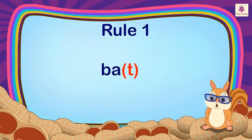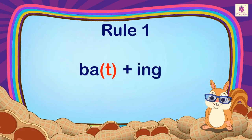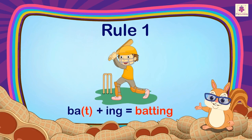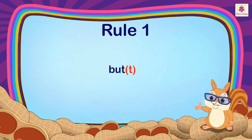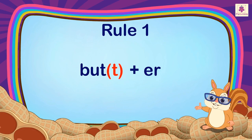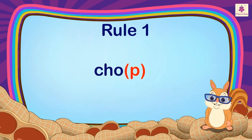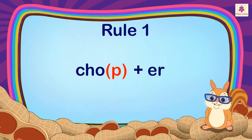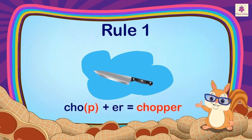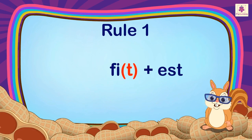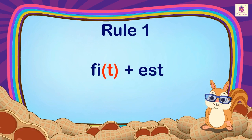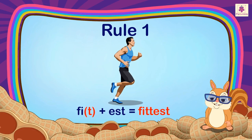For example: Bat plus ING gives Batting. Bat plus ER gives Batter. Chop plus ER gives Chopper. Fit plus EST gives Fittest.